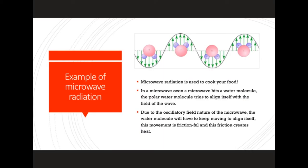To give an example of microwave radiation, we're going to talk about microwave ovens in your kitchen. Microwave radiation is used to cook your food. In a microwave oven, a microwave hits a water molecule. The polar water molecule tries to align itself with the field of the wave. Due to the oscillatory nature of the microwave, the water molecule will keep moving to align itself. This movement is frictional, and the friction creates heat. This figure depicts a water molecule going through a microwave section.